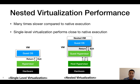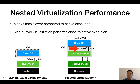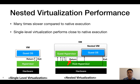Even when the guest hypervisor is done with the emulation and tries to return back to the nested VM, it also requires the host hypervisor's intervention. This is because the instruction to enter a nested VM needs access to the hardware support for virtualization, which the guest hypervisor doesn't have. So the host hypervisor emulates this instruction by preparing a nested VM execution and running the nested VM directly. In other words, the host hypervisor intervenes for every switch between the guest hypervisor and nested VMs. This phenomenon is called exit multiplication, and this is the key reason why nested virtualization is slow.